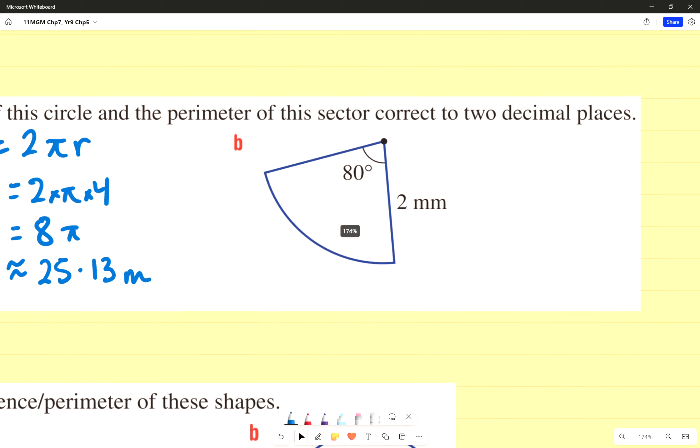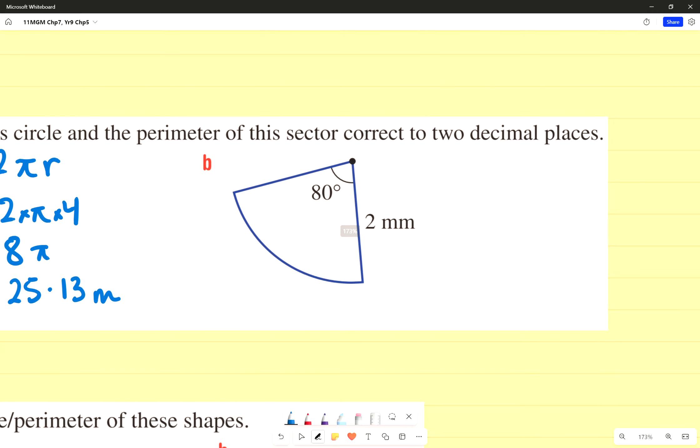Example on the bottom right-hand side. The perimeter of this sector, we're going to have, well, I know that's two millimeters, so this one has to be two millimeters as well. So, I'm going to use my formula.